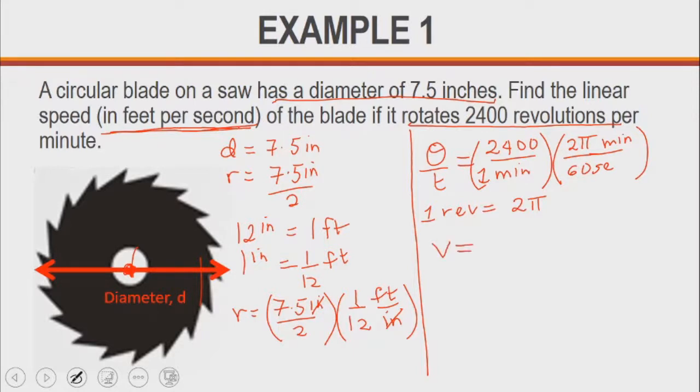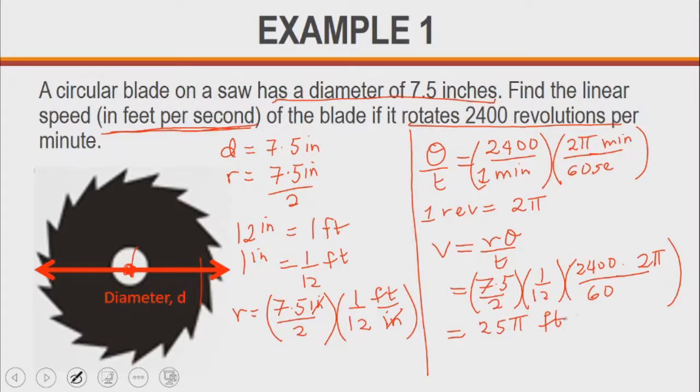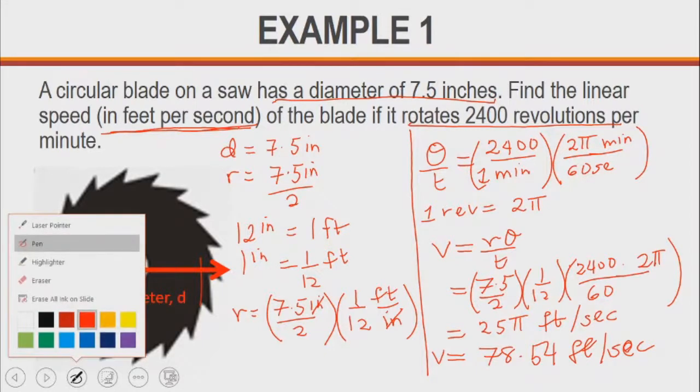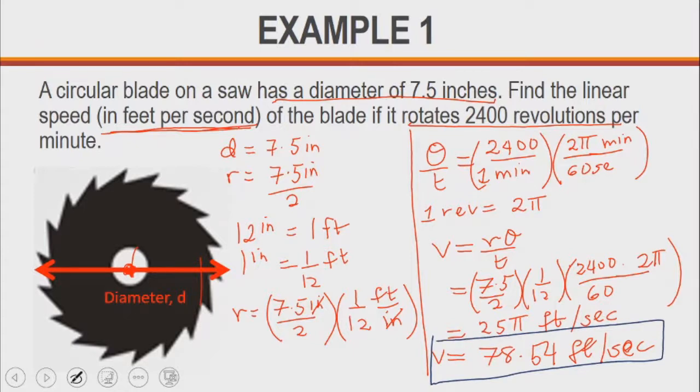Using the formula, we now know that the linear speed of this blade is r theta over t. So r is 7.5 divided by 2, multiply by 1 over 12 to convert inches to feet, then multiply by theta over t, which is 2,400 divided by 60, multiplied by 2 pi. If you put that into your calculator or simplify, everything comes down to 25 pi feet per second. And if you multiply 25 by pi, you're going to get 78.54 feet per second. So the linear speed in this case is 78.54 feet per second.